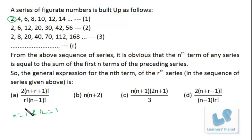So suppose I put n is equal to 1, r is equal to 1 in option 1. So it's 2, 1 plus 1 plus 1 that is 3 factorial into 2 by 1. That is it's not 2. It's much bigger than 2.